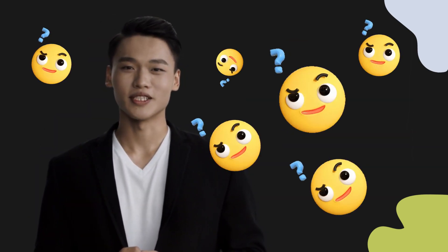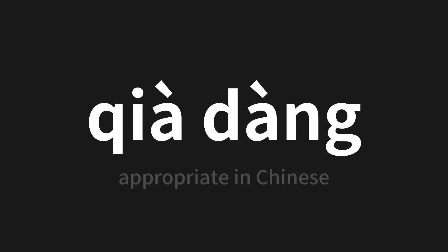Welcome to this pronunciation video. Today we will be focusing on a new word that you might find challenging or intriguing. Let's dive into today's word, which means appropriate in Chinese — 恰当 (qià dàng). Let's say it all together one more time.